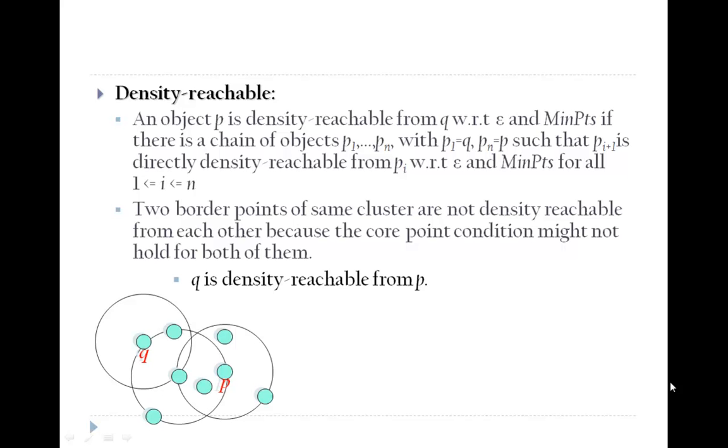Density reachable: An object P is density reachable from Q with respect to epsilon and min points if there is a chain of objects P1, P2, up to Pn with P1 equals Q and Pn equals P, such that P i plus 1 is directly density reachable from Pi with respect to epsilon and minimum points for all i between 1 and n.